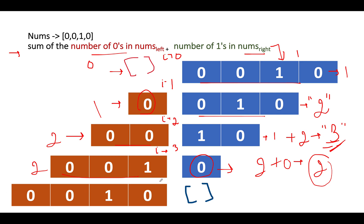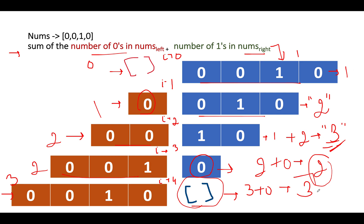Making the division at i equals 4, the left sub-array is [0, 0, 1, 0] and the right is empty. The number of zeros in the left is 3 and the number of ones in the right is 0. So 3 plus 0 gives a score of 3. Overall, we see the maximum score of 3 at two positions, corresponding to division indices 2 and 4. Hence the result is [2, 4].